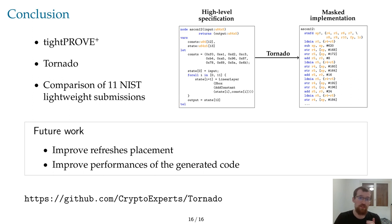And finally, we evaluated Tornado on 11 candidates of the NIST lightweight cipher competition, compared their performance, and showed that three of our implementations needed additional refreshes to be secure in the register-probing model.